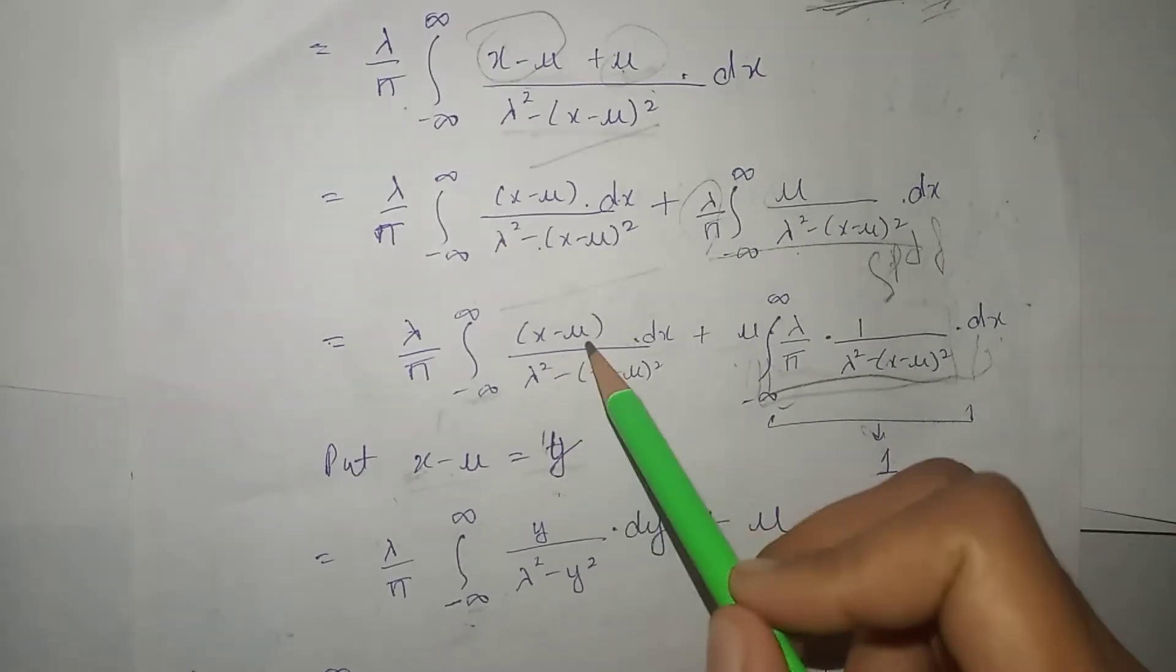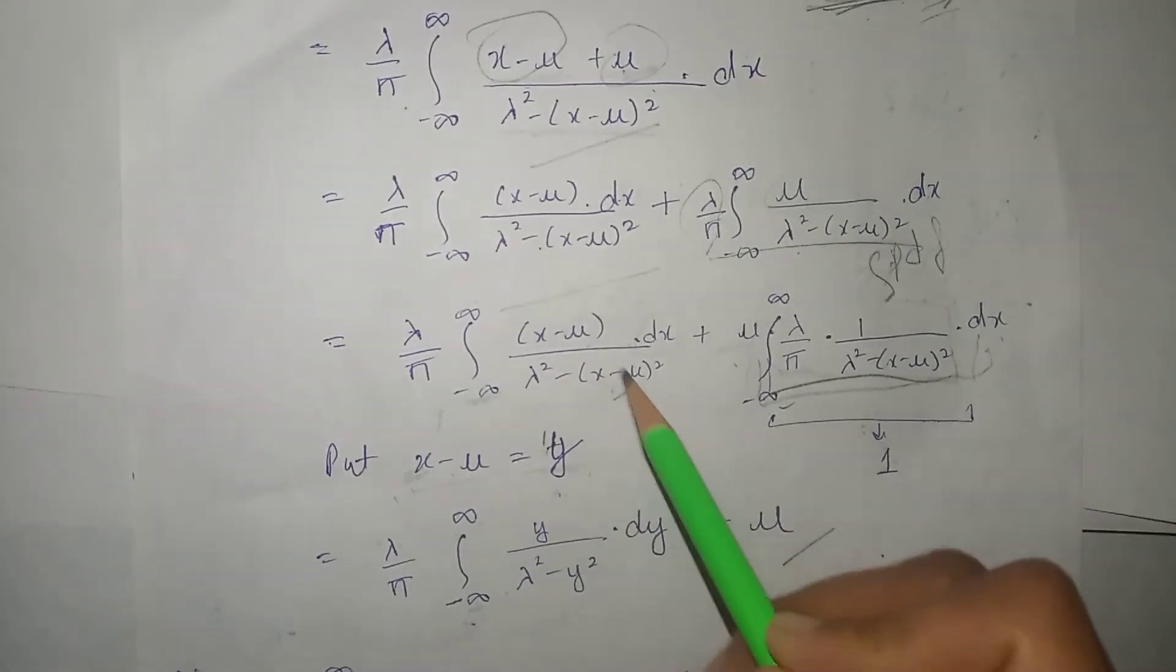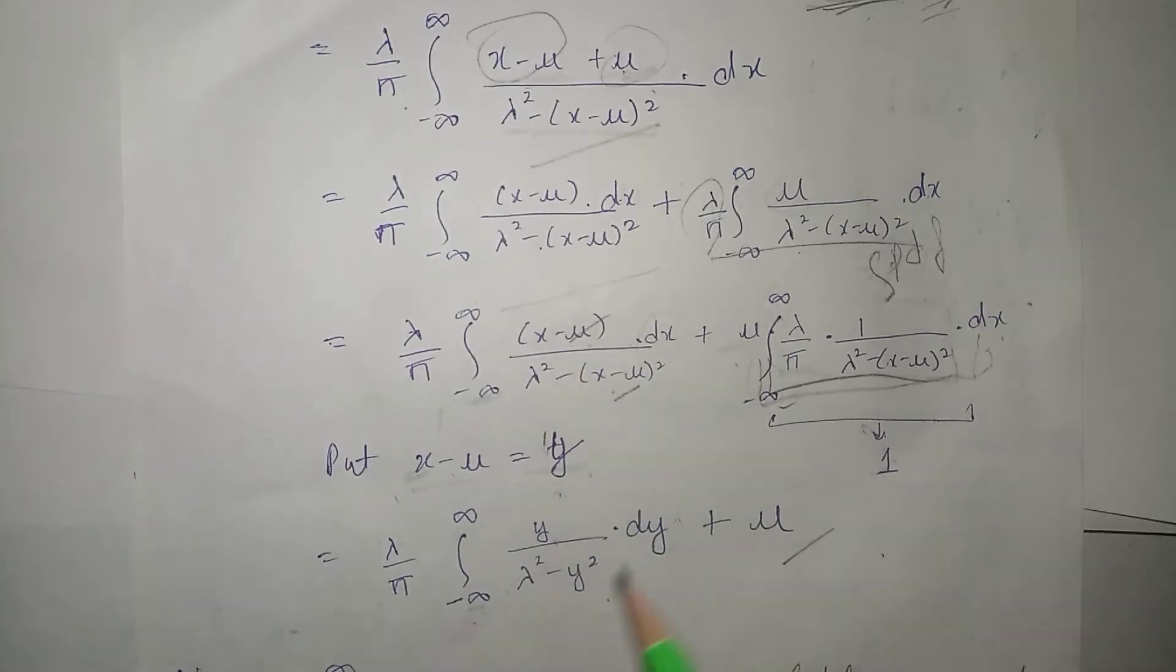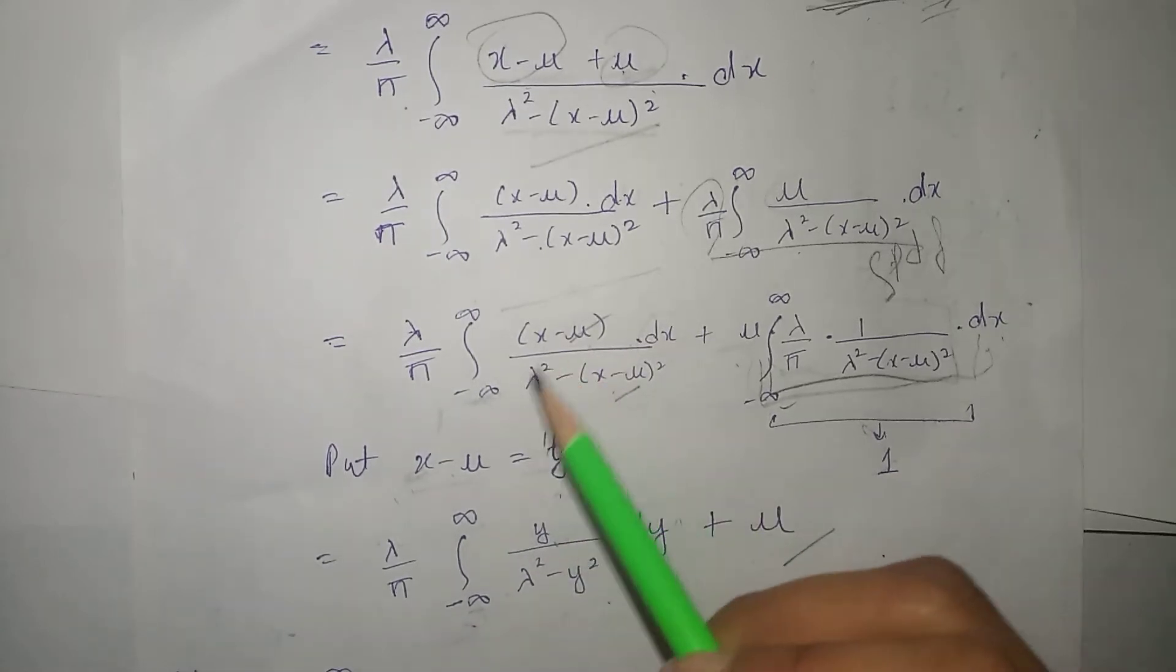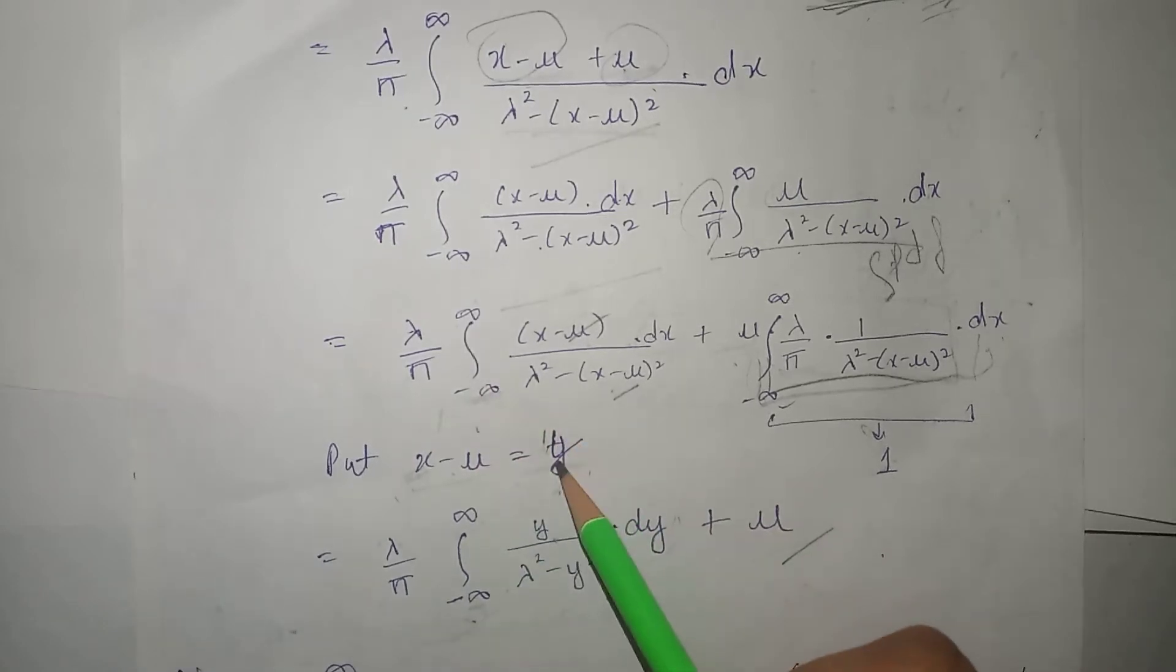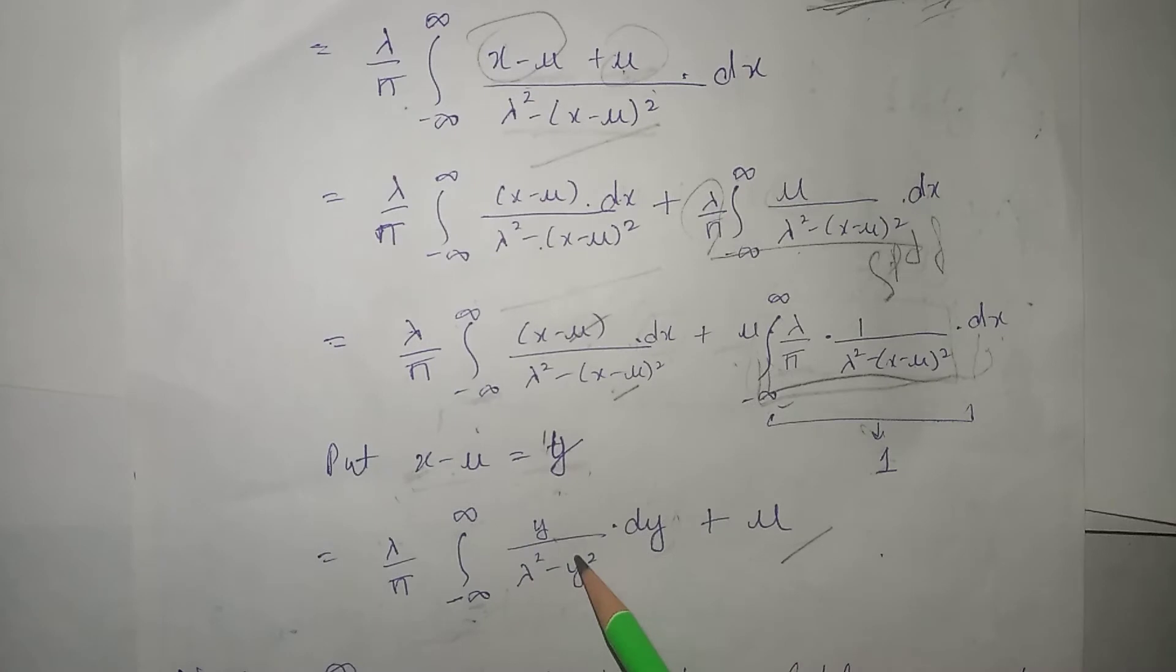And next, abh humne x minus mu ko humne y put kar diya. So that's why ya hamper y, ya hamper y aagya. Vaise ki abh, dekhe, x ki limits thi humare paas, yaha minus infinity and infinity. Humne nikalne hai ya y ki limits abh, because y variable use ho kar raha hai hai.